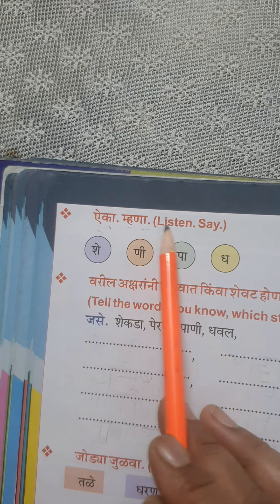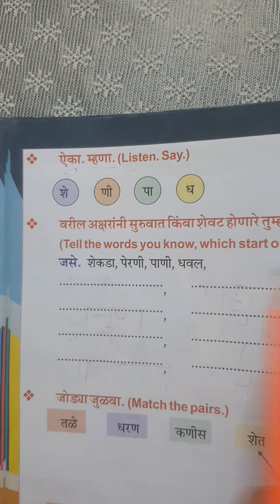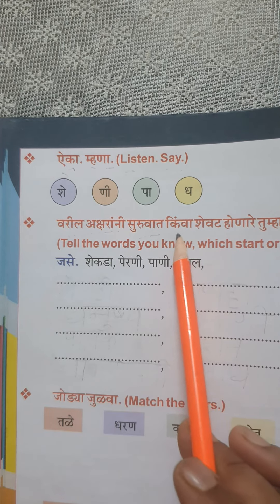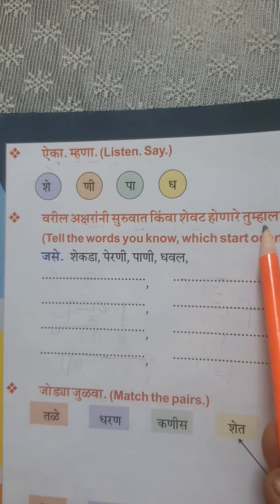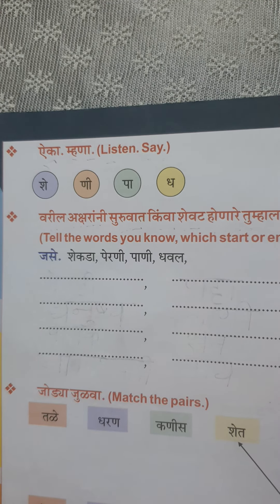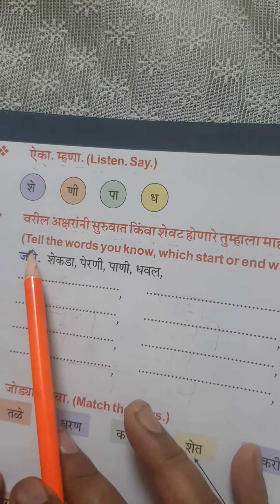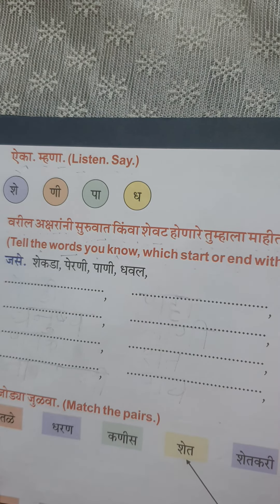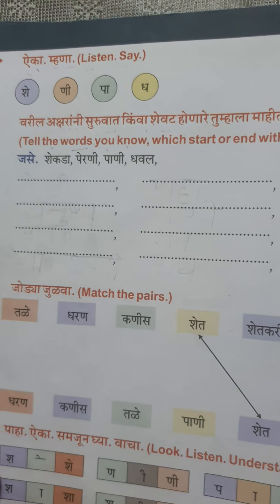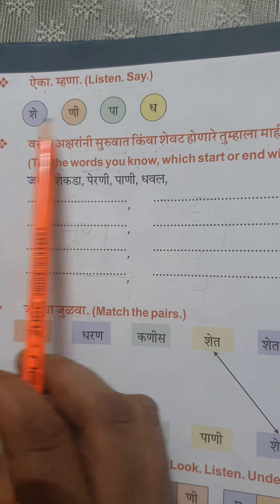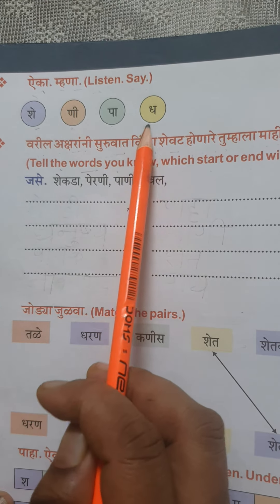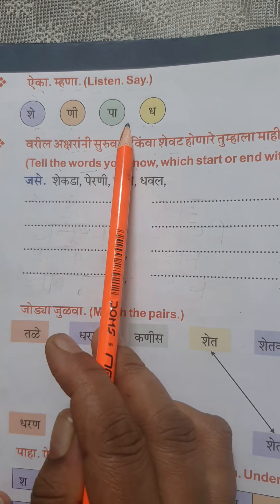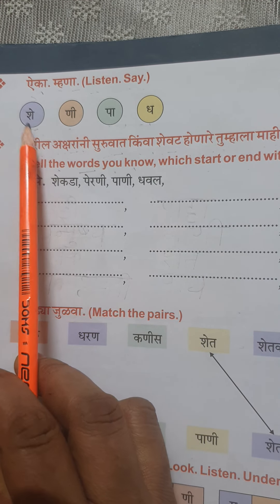Aika mana — listen. Tell the words you know which start or end with the above letters. From the letters She, Ni, Pa, and The, you have to make words — beginning or ending. So from She, we will make some word which starts with She.